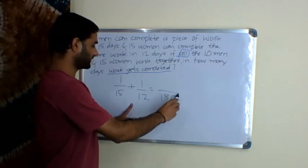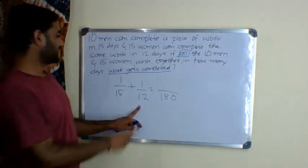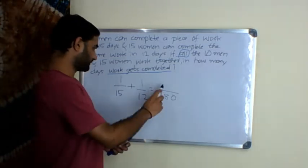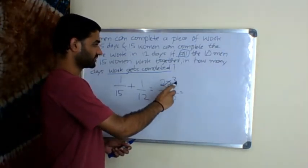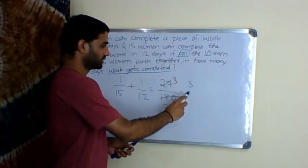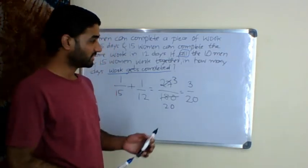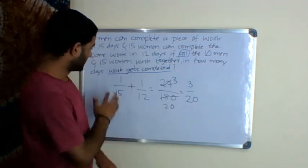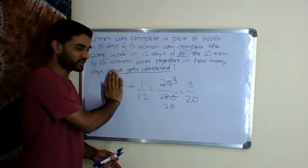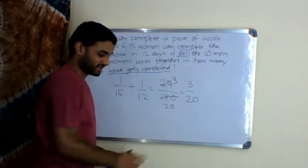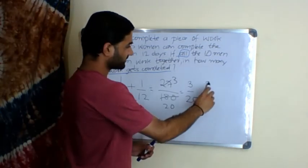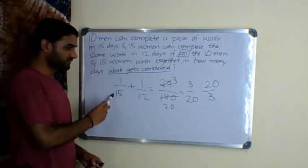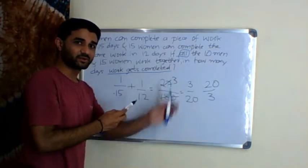One-day work of men plus one-day work of women gives us one-day work of all. When you get one-day work of all, if you reciprocate that, you get the number of days. We'll just add: the LCM is 180 because 15 × 12. It's 12 + 15, which is 27/180. That simplifies to 9 × 3 over 9 × 20, which is 3/20. This is one-day work.